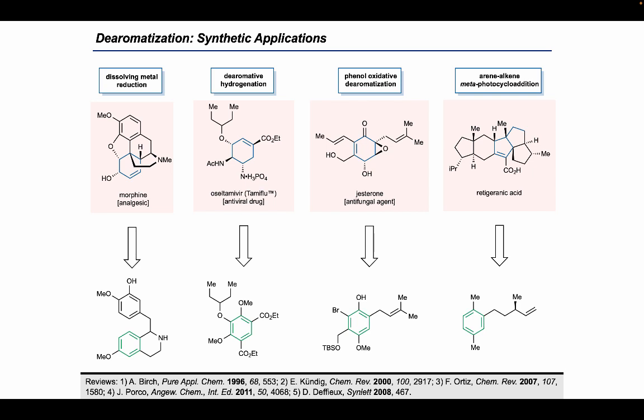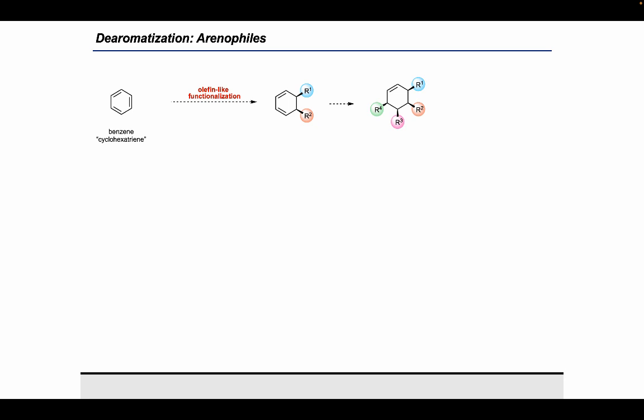From a retrosynthetic standpoint, the precursors of the key steps are highly decorated arenes that require significant synthetic overhead in order to arrive at. Along this line, we imagined an alternative dearomative approach in which an unfunctionalized simple arene might serve as a more economic, readily available, and diversifiable precursor. With this in mind, we began with benzene, the most basic arene available, and imagined it as a classical cyclohexatriene. In this manner, it is possible to imagine controlled functionalization of each olefin to eventually arrive at a densely functionalized cyclohexane core.